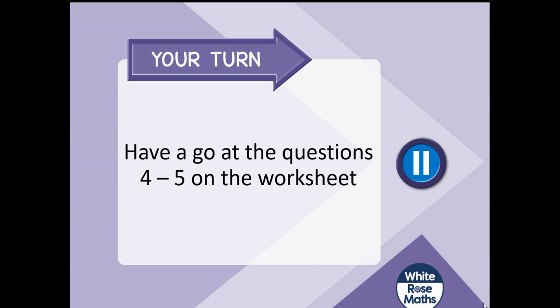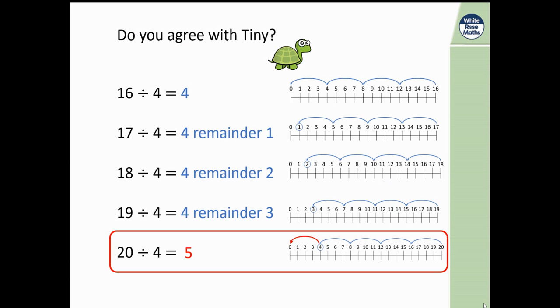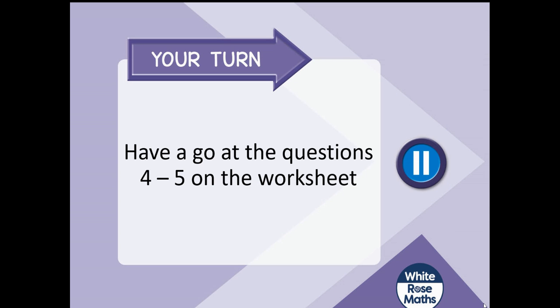So have a go, year 5, at completing the next questions 4 to 5 on the worksheet and have a go with the number lines. Just remember you're trying to get to 0. If you don't quite get to 0, then it is the number that you land on that is your remainder. Okay, and I look forward to seeing how you get on.